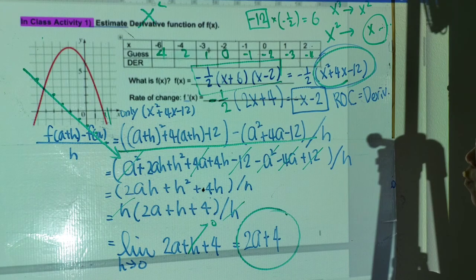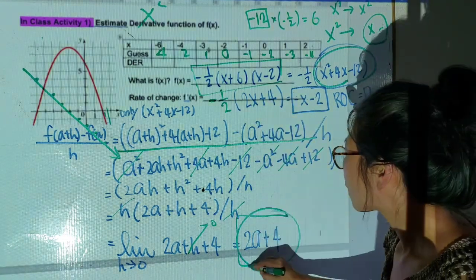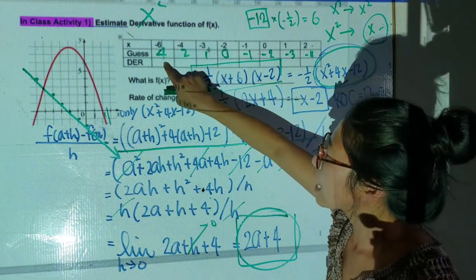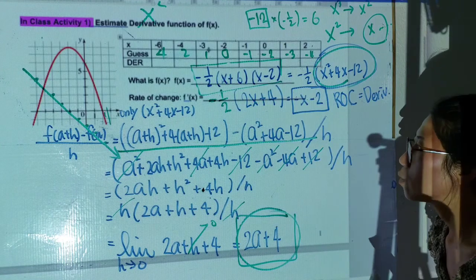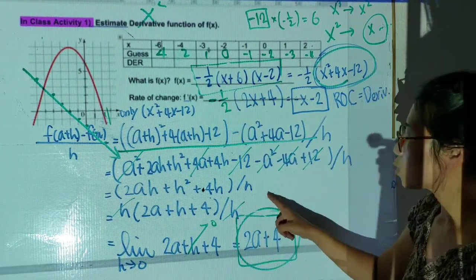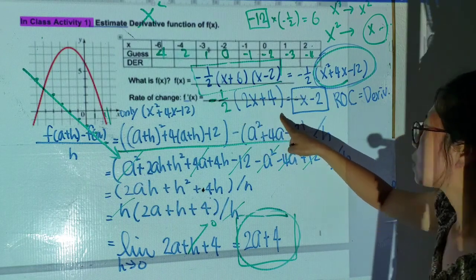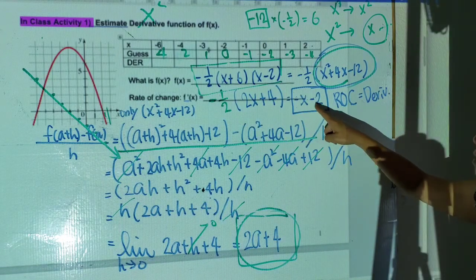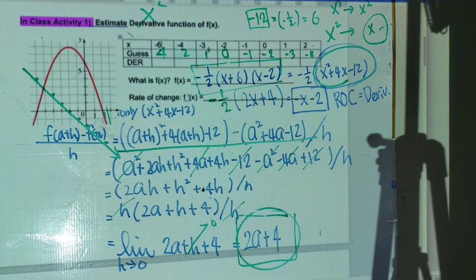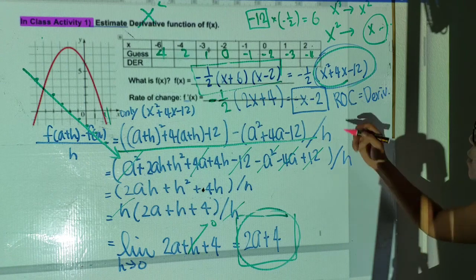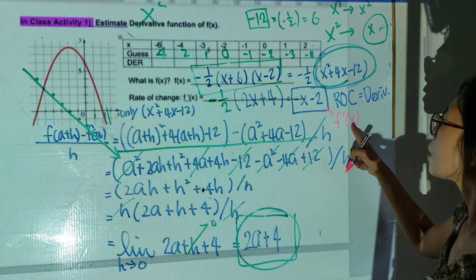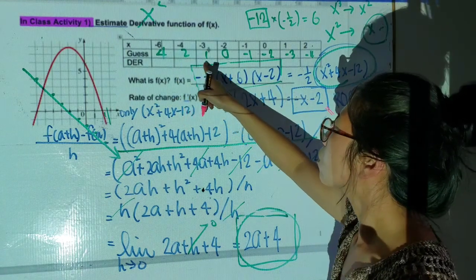After the rate of change, I got: f'(x) = (-1/2)(2x + 4) = -x - 2. So this is my derivative function. All you need to do is plug in an x-value to get the exact slope at that moment. Let's plug in x = -6: negative of (-6) minus 2 = 6 - 2 = 4. Nice guess — I get 4!